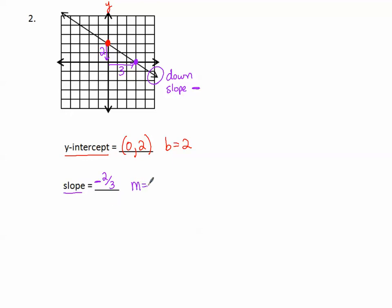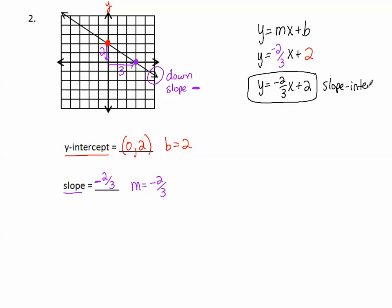So m is negative 2 thirds. Let's write down our slope-intercept form, y equals mx plus b, and fill in for the m and the b. The m is negative 2 thirds, and the b is positive 2. So y equals negative 2 thirds x plus 2. This is our slope-intercept form of the equation of our line.